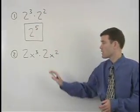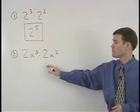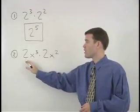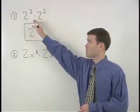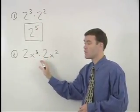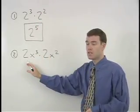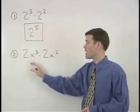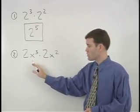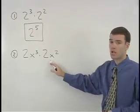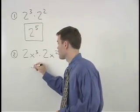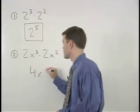Now let's look at the second problem on the board. Notice that the 2's in this problem are not bases like they were in the first problem. They are coefficients. In this situation, we can multiply the 2's together. So 2x to the third times 2x squared is 4x to the fifth.